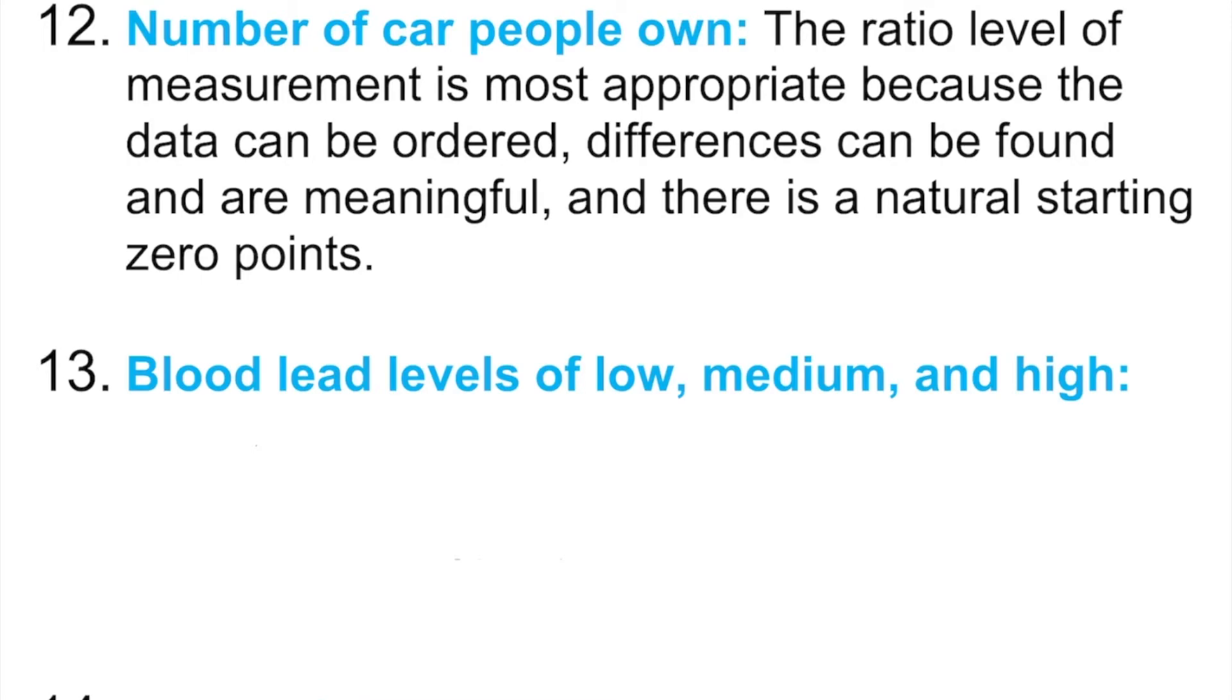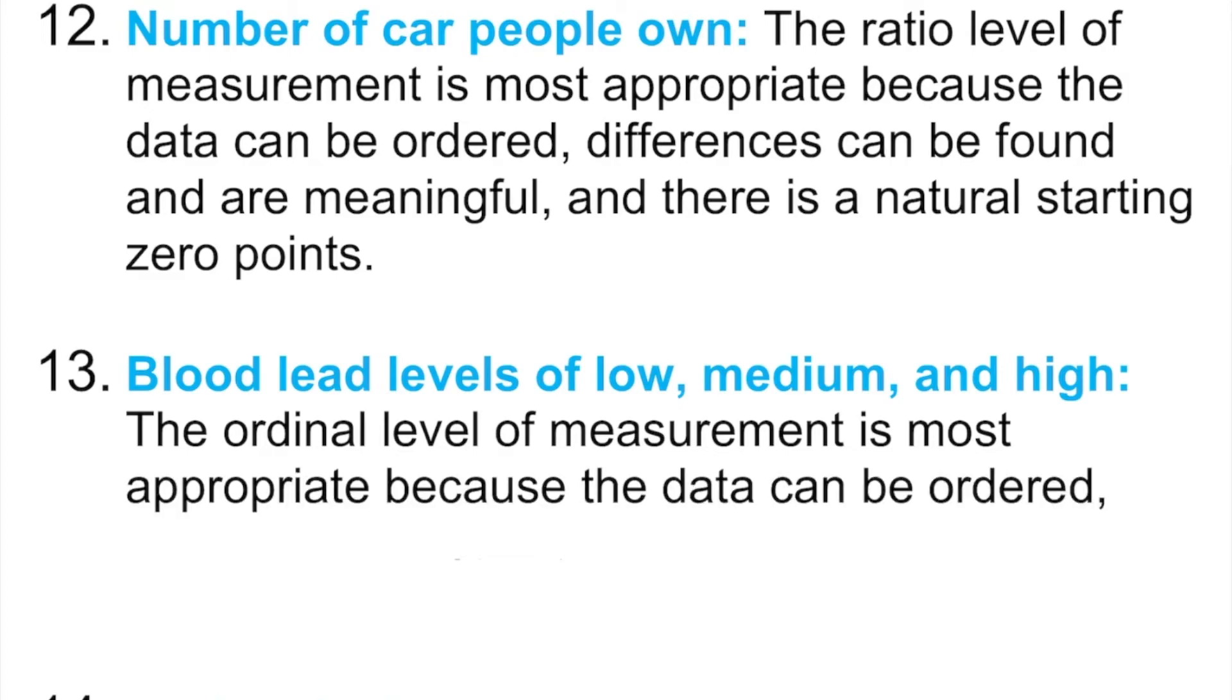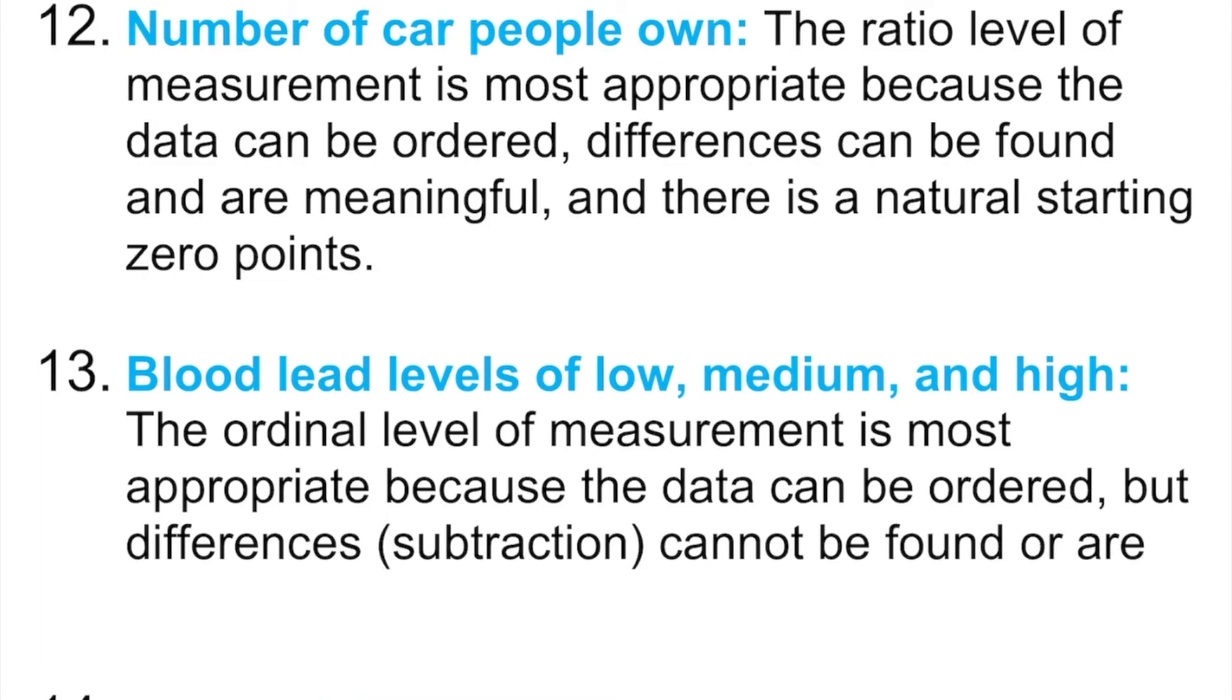Now, if we move into the second one, on number 13, blood lead levels - low, medium, high. You already know what is that. The ordinal level of measurement is the most appropriate because the data can be ordered, but the differences cannot be found, are meaningless.